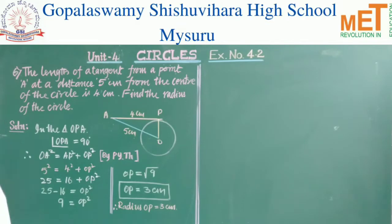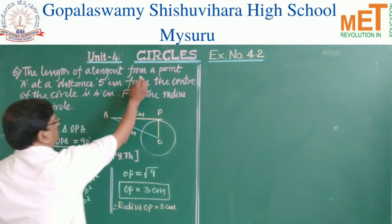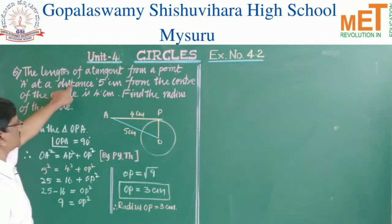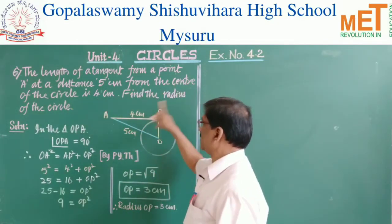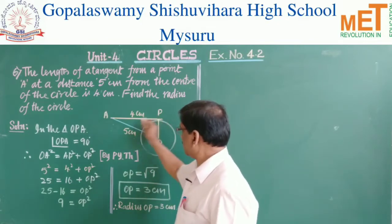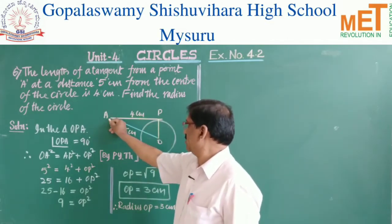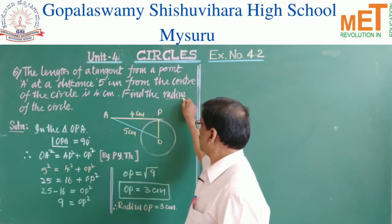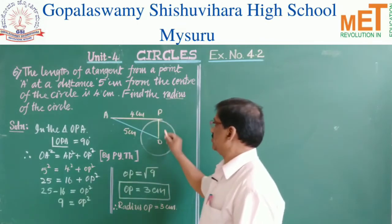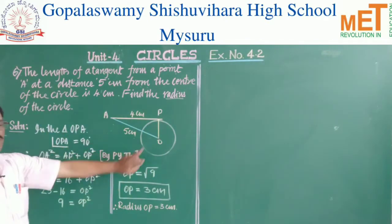Now children, the sixth problem: the length of a tangent from a point at a distance of 5 centimeters from the center of the circle is 4 centimeters. Find the radius of the circle. The tangent length is 4 cm and the distance from the point A to the center is 5 cm. According to the figure, it forms a right triangle with the radius, tangent, and distance.